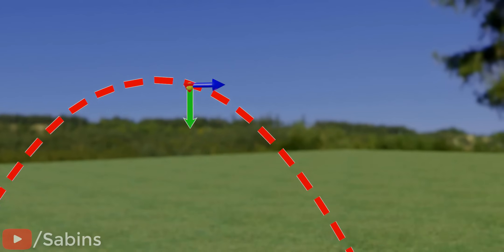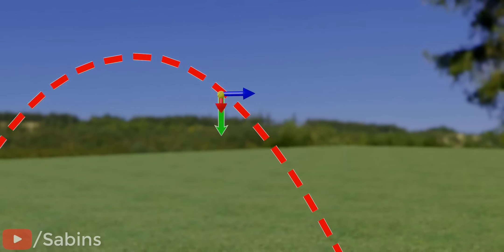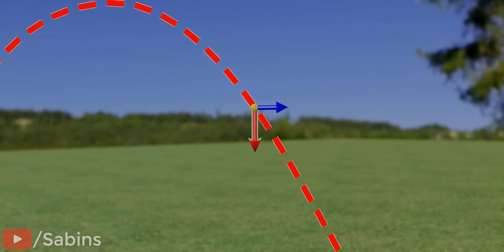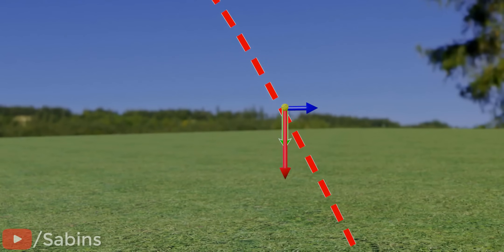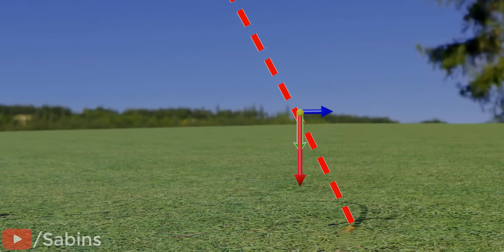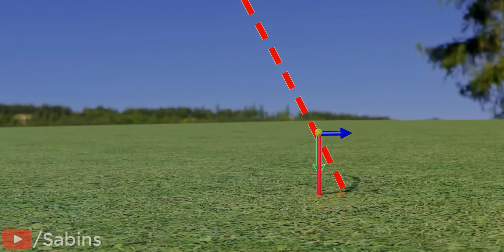Therefore, the initial horizontal component of velocity you have given will also not change throughout the motion of the object. Let's analyze this more closely and see how the variation of the vertical component of velocity affects the shape of the trajectory.